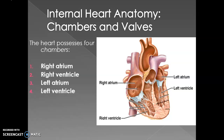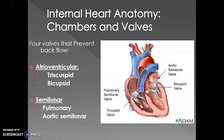This diagram from the textbook shows the internal heart anatomy. On top we have the right atrium and left atrium; on the bottom, the right ventricle and left ventricle — those are the four chambers of the heart. Looking at the valves: between the right atrium and right ventricle is the tricuspid valve; between the left atrium and left ventricle is the bicuspid valve. Remember: we try before we buy.